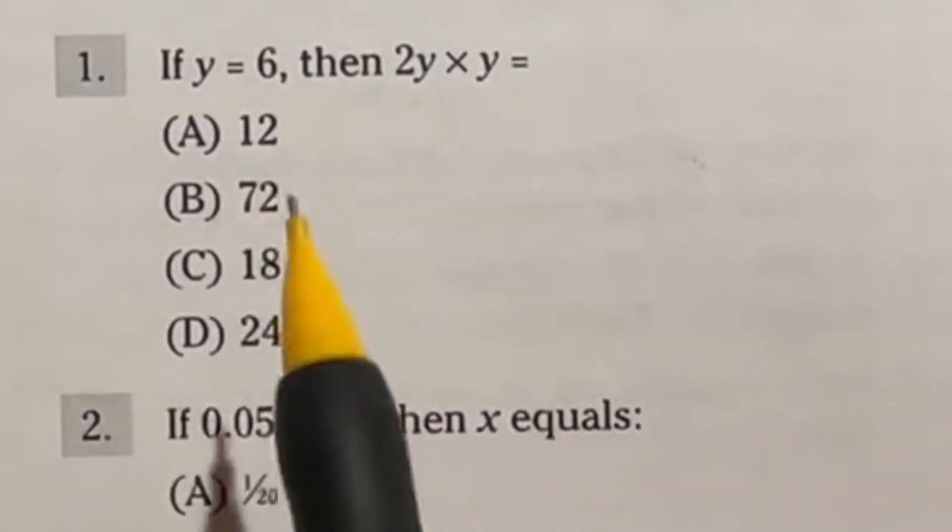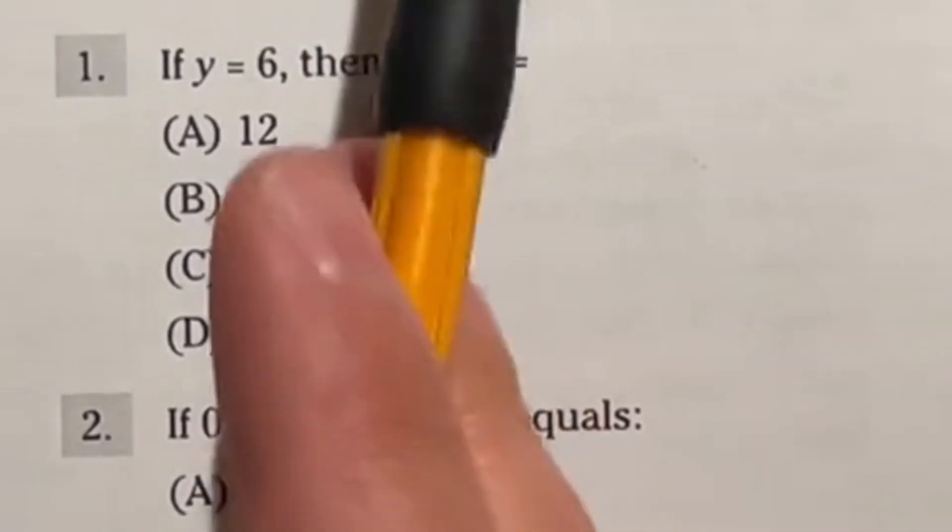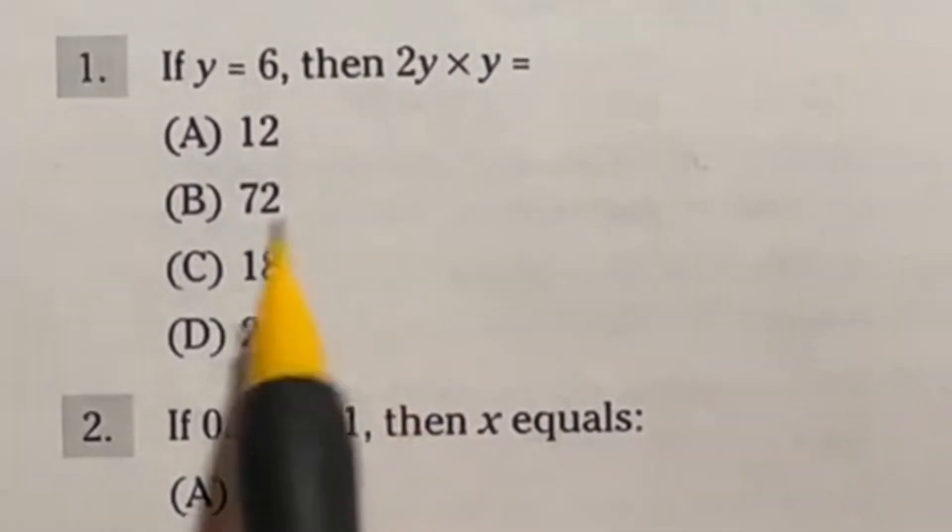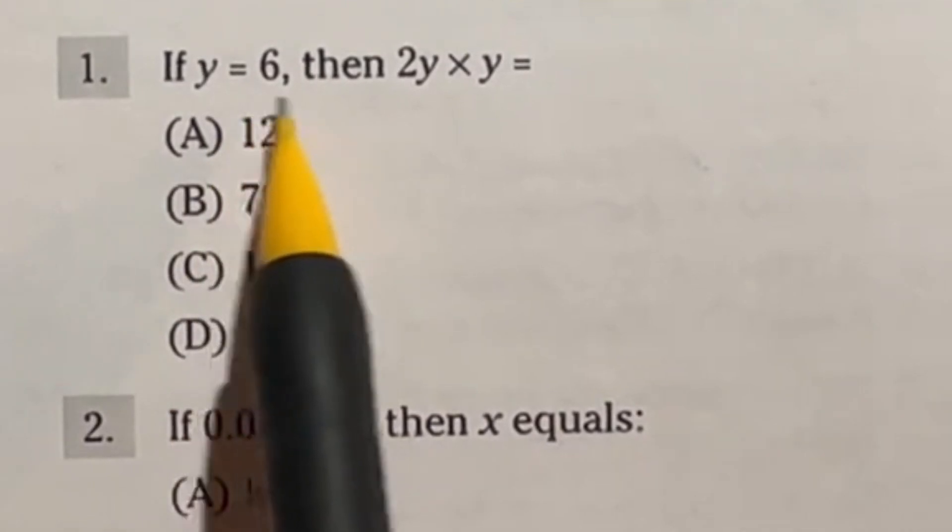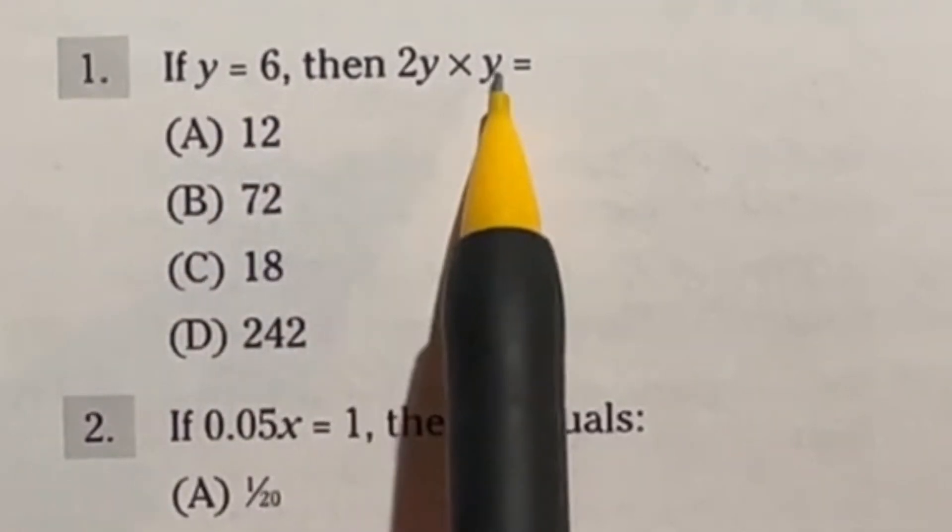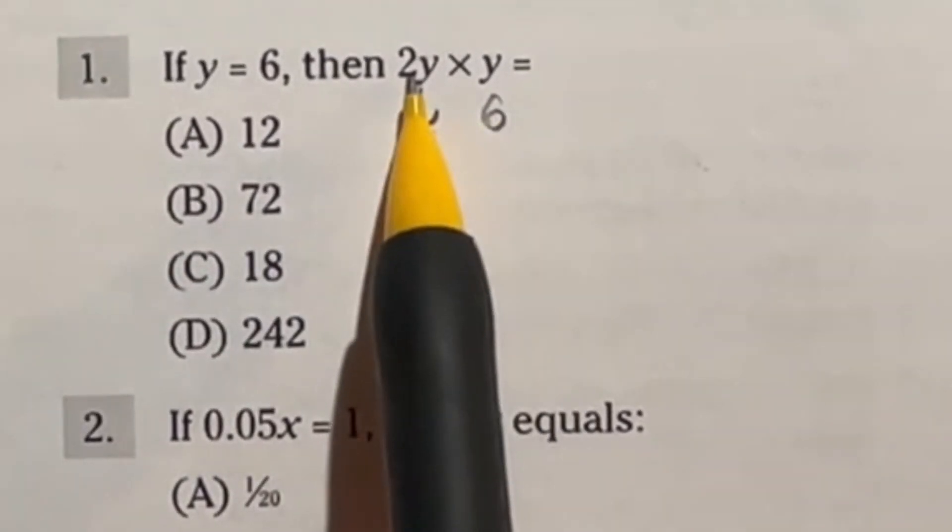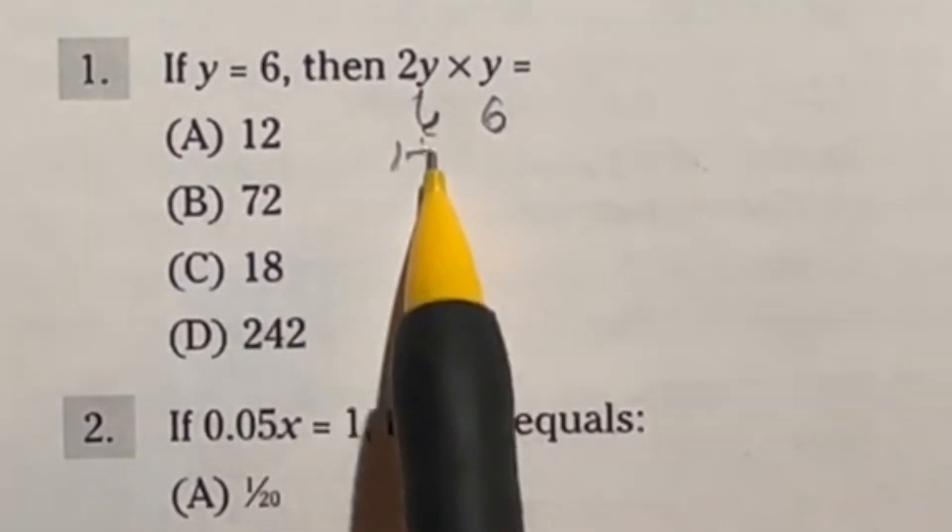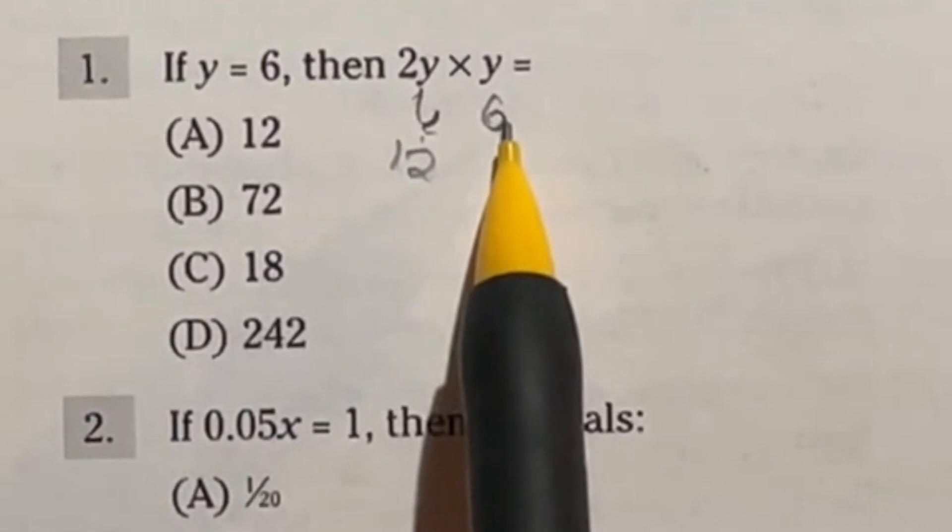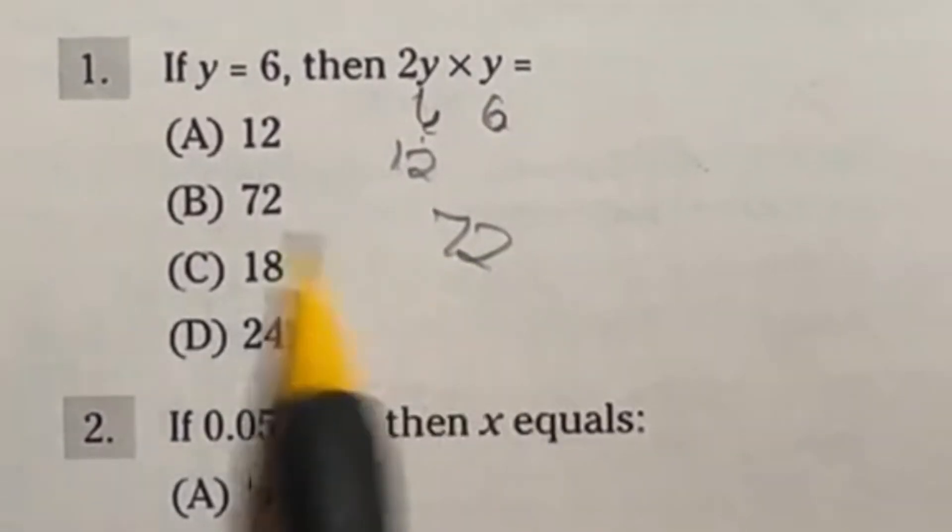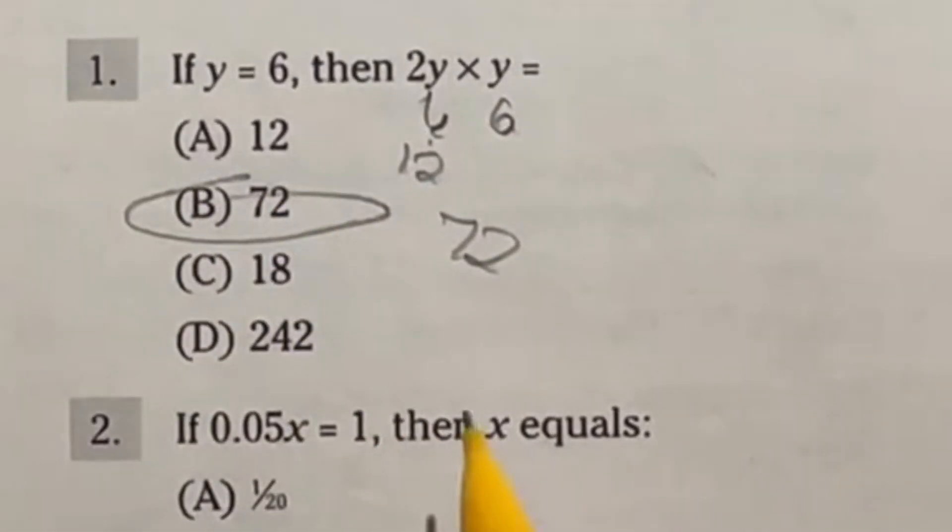Today we're starting a new test, mathematic knowledge, part of the ASVAB military entrance exam. It says if y is equal to 6, then what is 2y times y? Remember, we're plugging in 6 in both cases here. So really we're doing 2 times 6, which is going to give me 12, times another 6, which is actually going to end up giving me 72. So our final answer here is B.